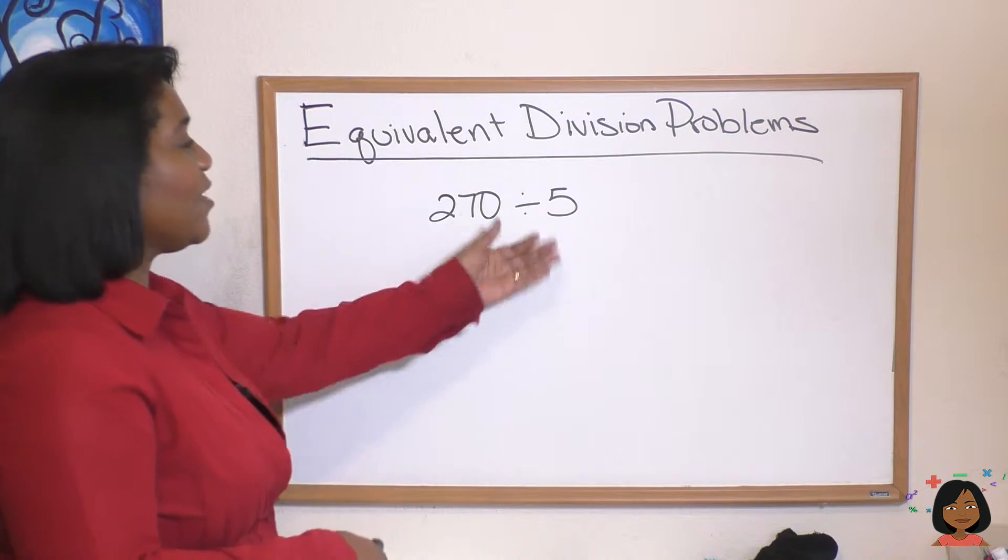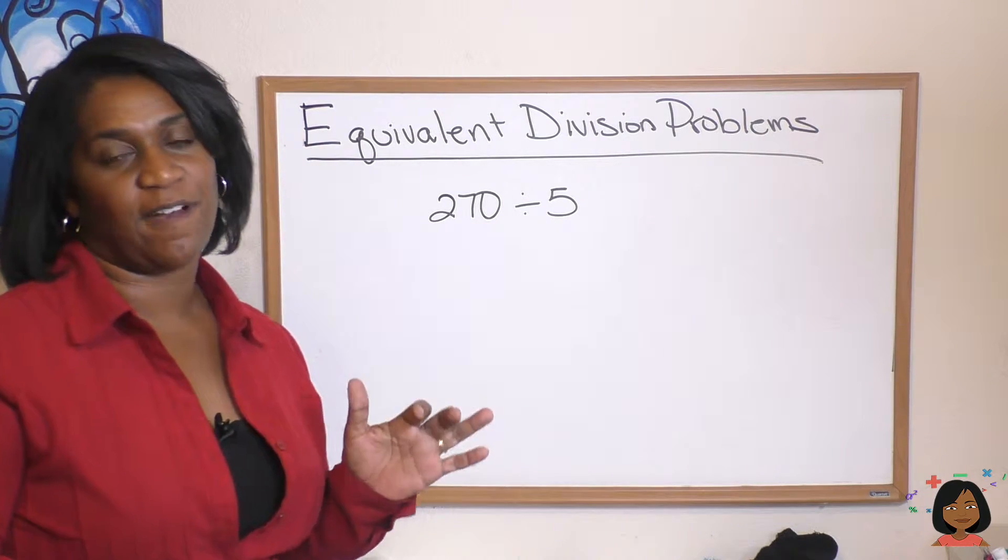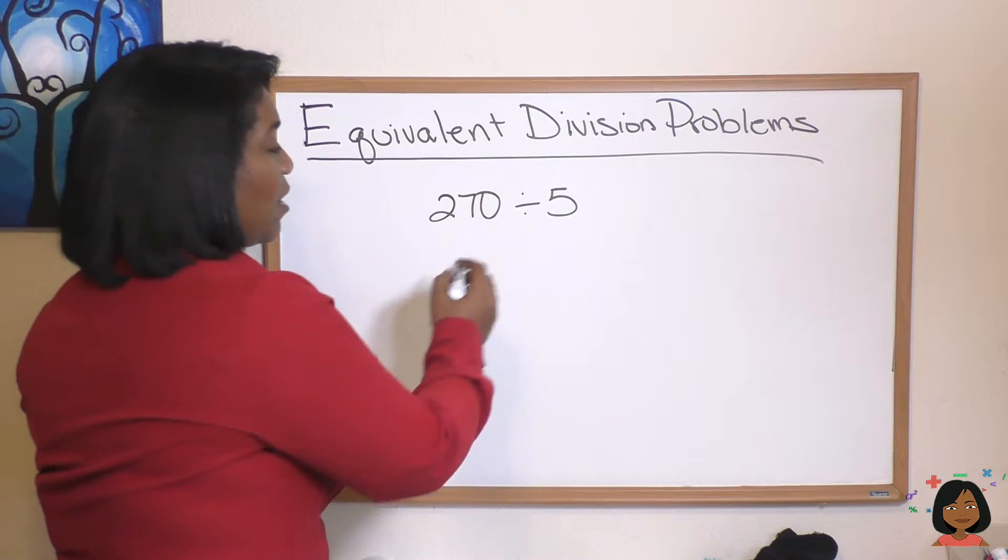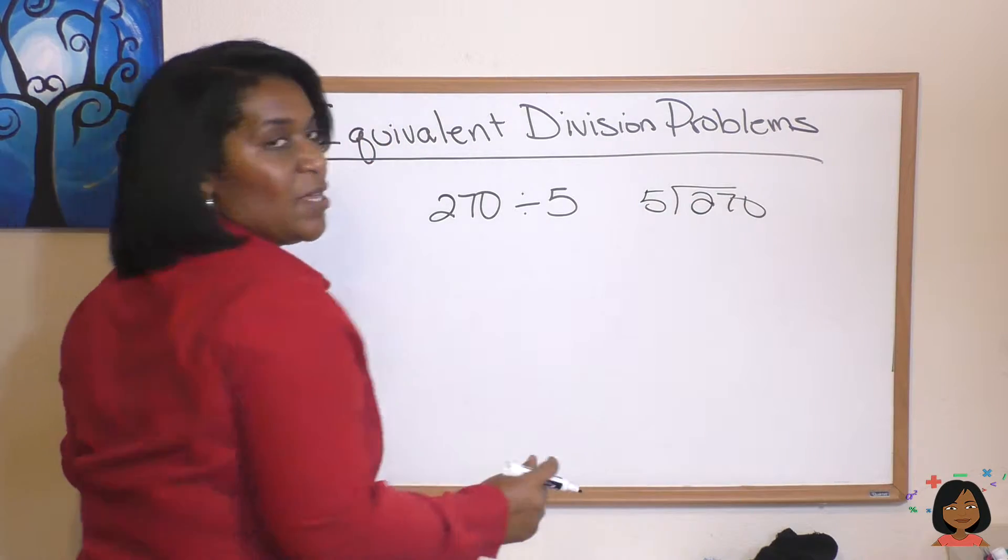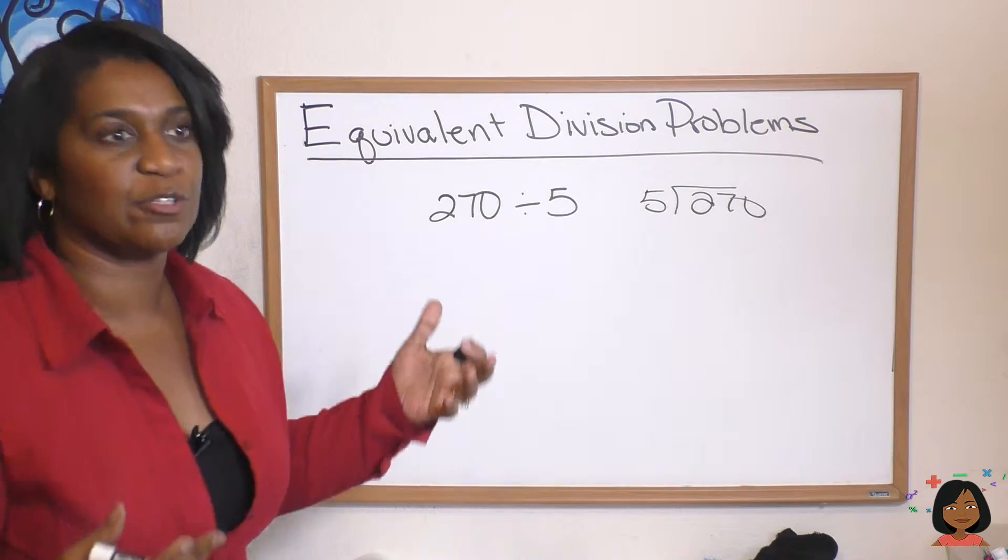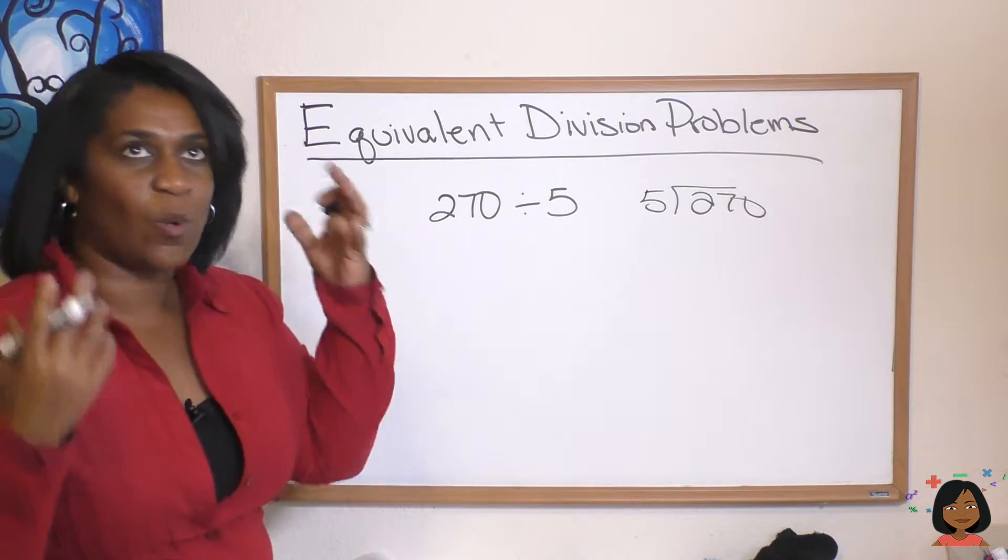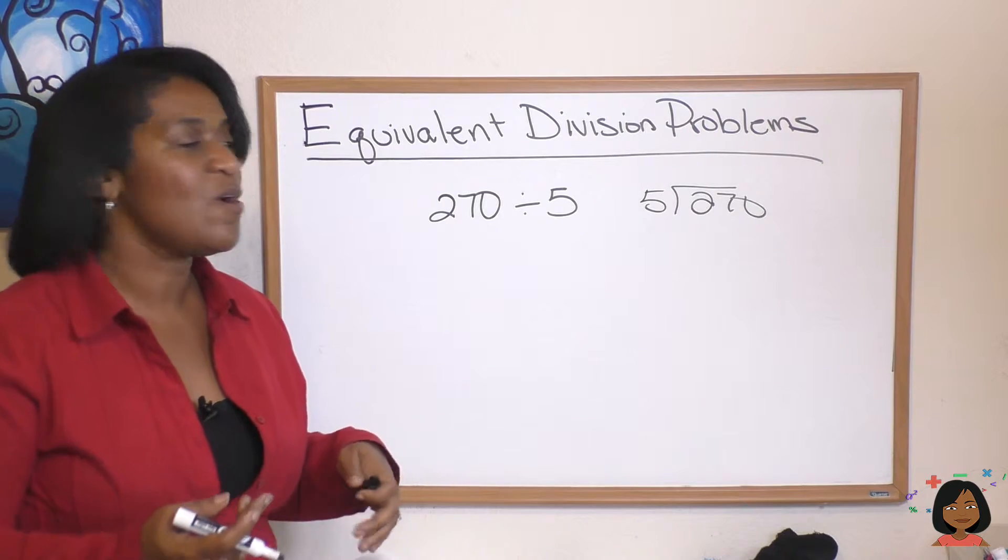So I have 270 divided by 5, it's a division problem. I could get my division bar out and do 5 into 270 and figure it out, but what if I was at the grocery store and I had this question in my head? I had to figure this out.